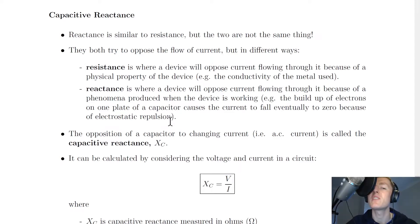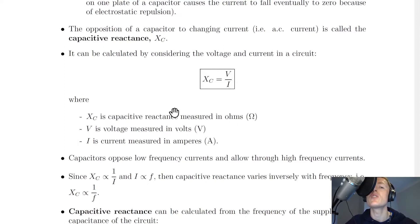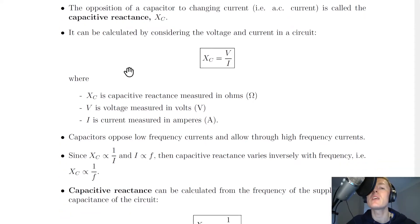So reactance is different to resistance, but both of them do oppose the flow of current. We now have a definition of capacitive reactance, which is given the symbol capital X lowercase c. And we say that capacitive reactance is the opposition of a capacitor to changing current, i.e. an AC current. It can be calculated by considering the voltage and current in a circuit.